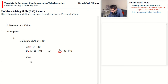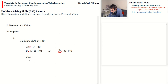The reason for using decimals here is because this is assumed to be an application. If this problem were theoretical, we would use 22 hundredths of 140 and write the answer as a fraction — in this case the mixed number 30 and four-fifths.